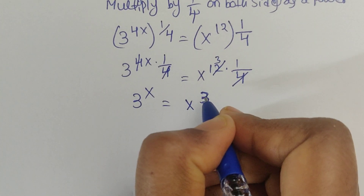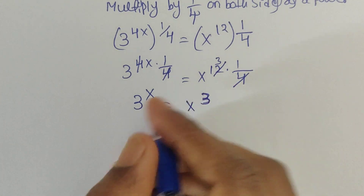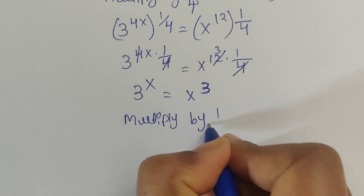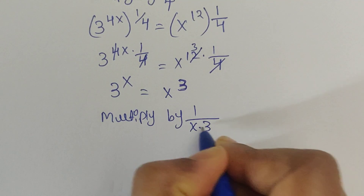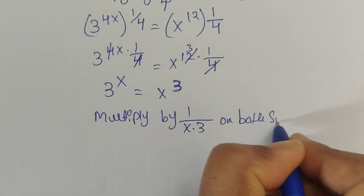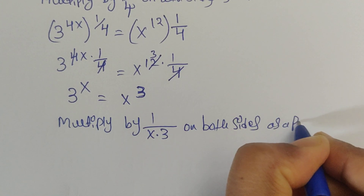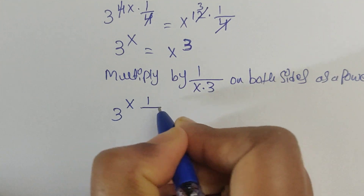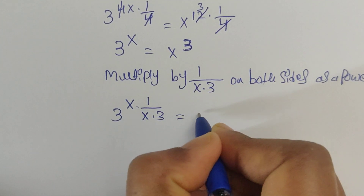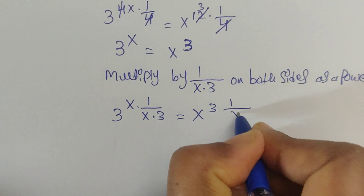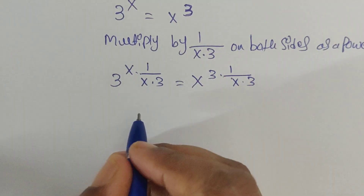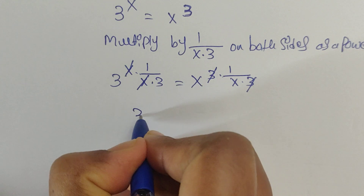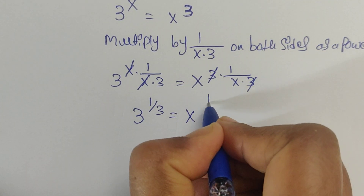So we have 3 to the power of x equal to x to the power of 3. Now we multiply both sides by 1 over (x times 3) as a power. Here x and x cancel, and 3 and 3 cancel, then we get 3 to the power of 1/3 equal to x to the power of 1/x.